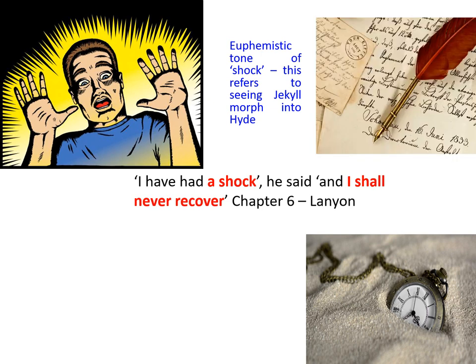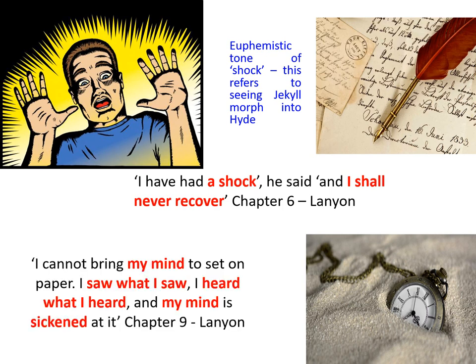We learn in chapter nine through the form of the letter, where Lanyon says: 'I cannot bring my mind to set on paper. I saw what I saw, I heard what I heard, and my mind is sickened at it.' In this particular context, it's the bombardment of the senses with the repetition of sight and hearing, and also the possessive pronoun 'my' alongside the narration of what was in his mind.